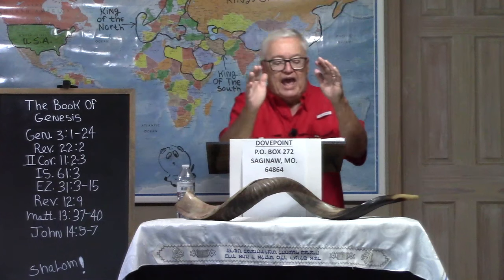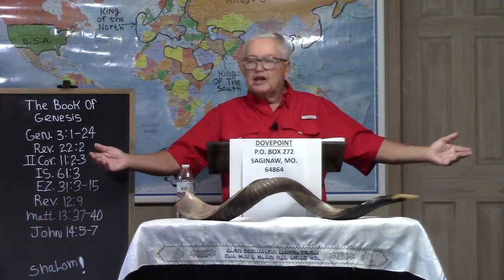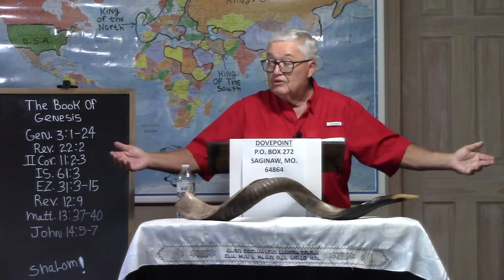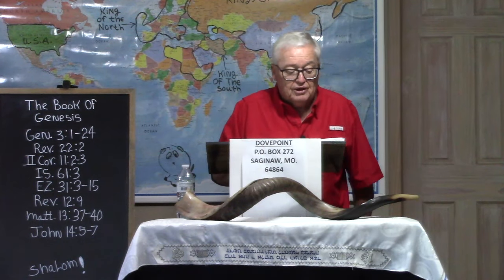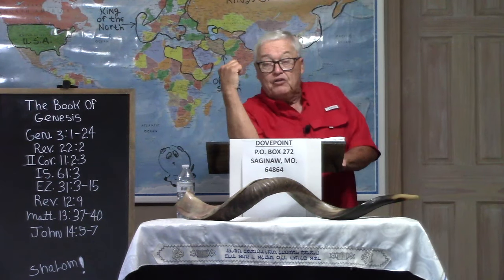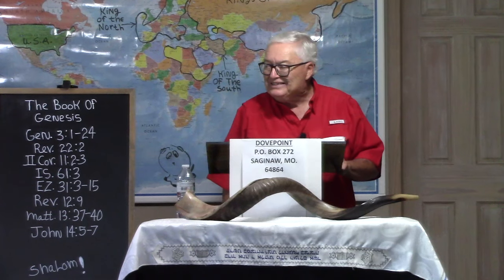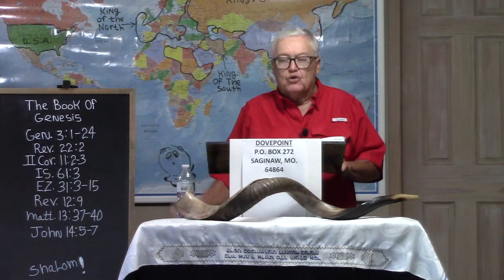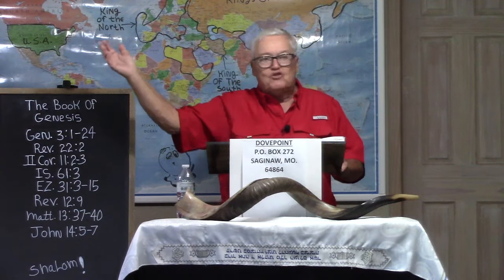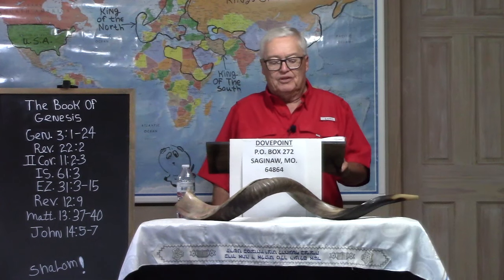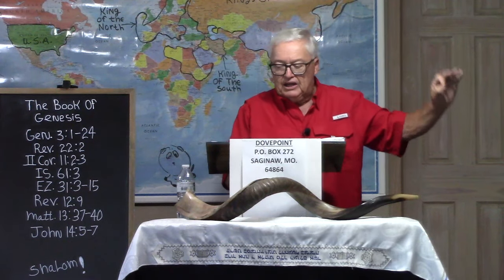Verse 21: 'Unto Adam and to his wife did the Lord God make coats of skins and clothed them.' God had to go do something — here's a picture of redemption, an early picture of the cross. He had to go make coats of skins. Because of their sin, something had to die in order for something else to live. In this case it was an animal. That's what all the sacrifices were for throughout the Old Testament — that bloodshed has got to happen. And there was bloodshed because of Adam and Eve's sin.